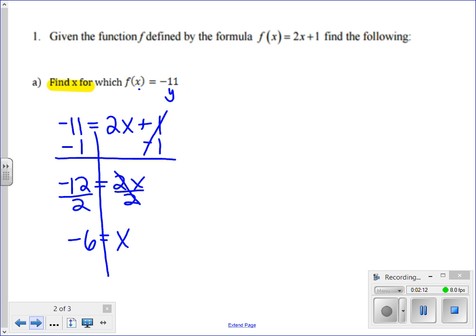And I'm going to write this as an ordered pair. I know that I have an x value of negative 6 that gave me an output of negative 11.